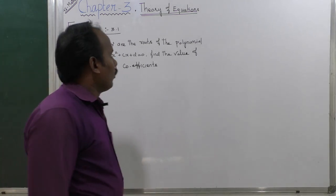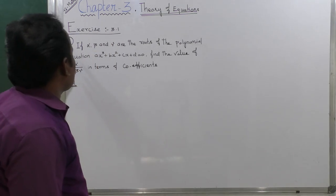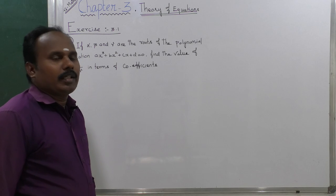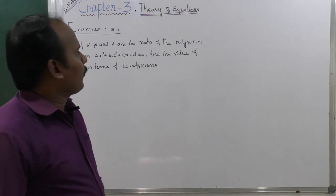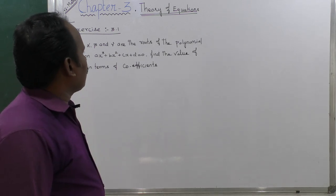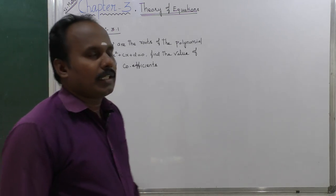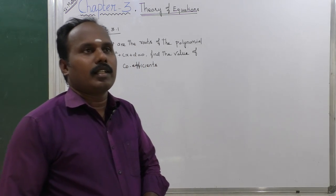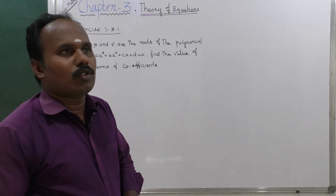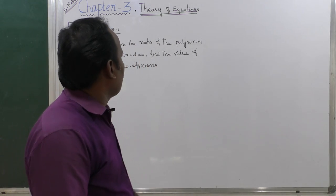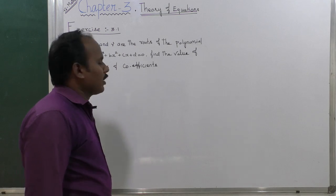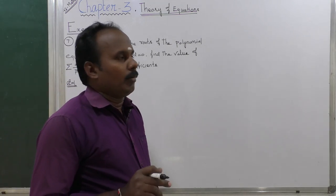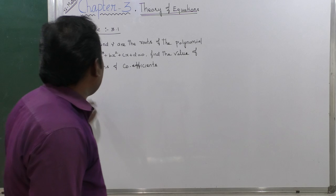Exercise 3.1, 7th sum. If alpha, beta, and gamma are the roots of the polynomial equation x³ + bx² + cx + d = 0, then find the value of summation of alpha divided by beta gamma in terms of the coefficients.